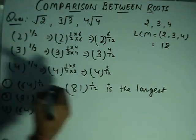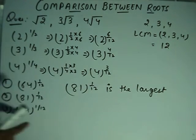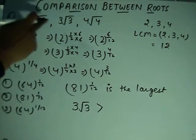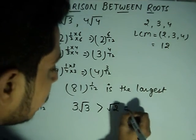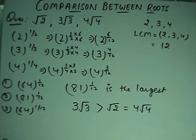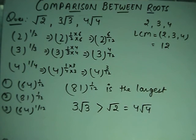Among all values, 81 to the power 1 by 12 is the largest. Comparing with the second value, we can write the final relation: cube root of 3 is greater than root 2, which equals 4. This is how we compare root values using this method. You can also do it with approximation. If you're good at other topics, subscribe to our channel and don't forget to share — it may help others crack the exam.